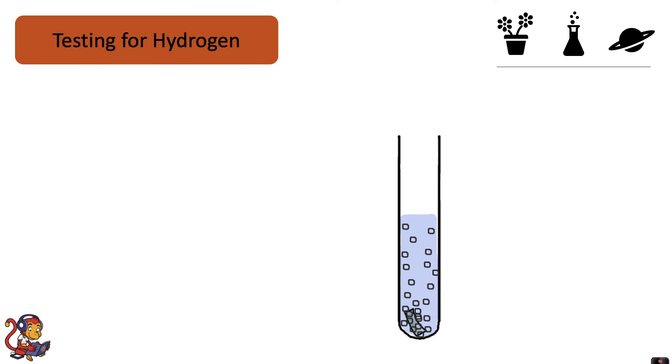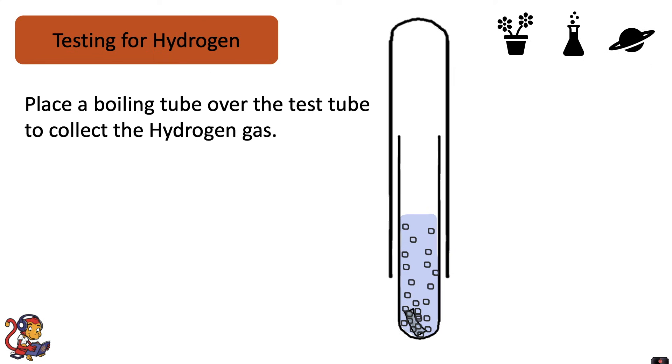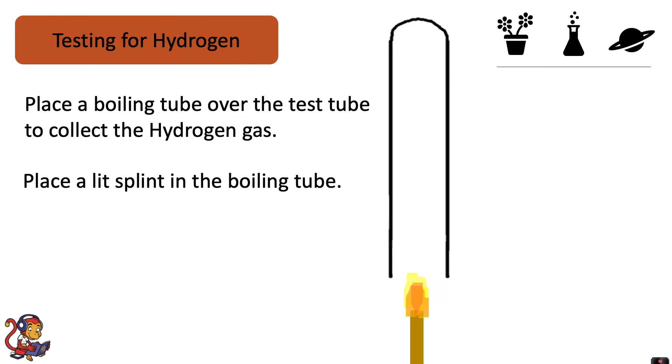You can do a test to prove that it's hydrogen gas. You would place a boiling tube over the test tube to collect the hydrogen gas, then place a lit splint in the boiling tube. And if you hear a squeaky pop, hydrogen is present.